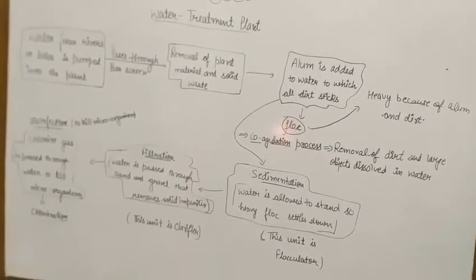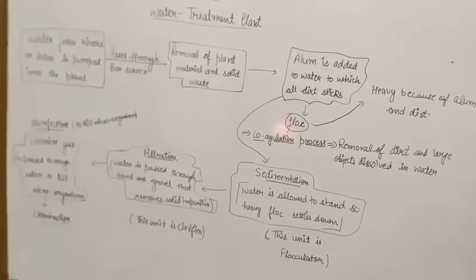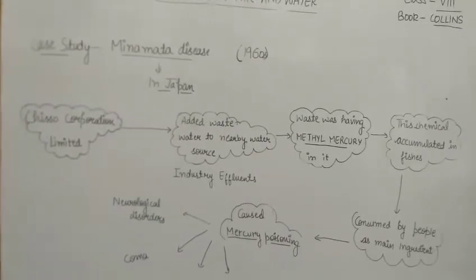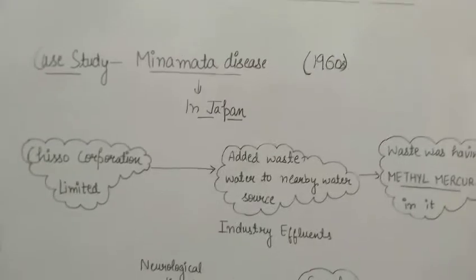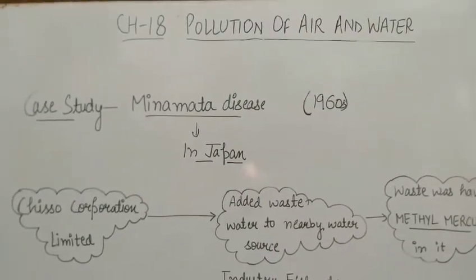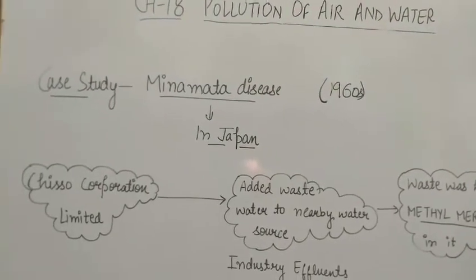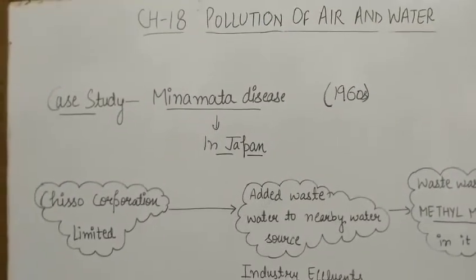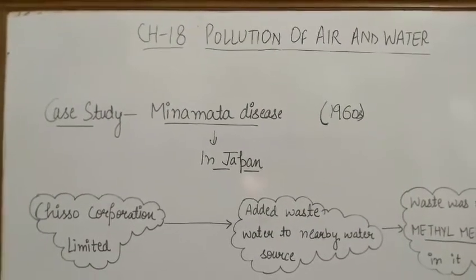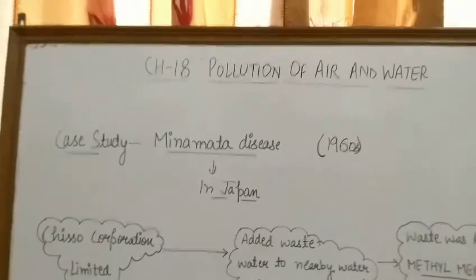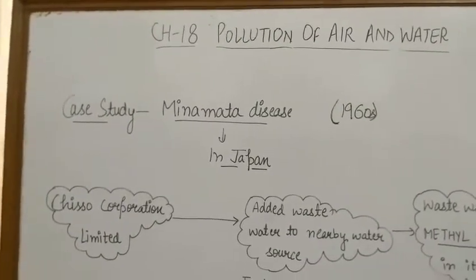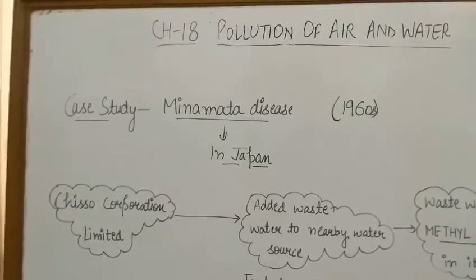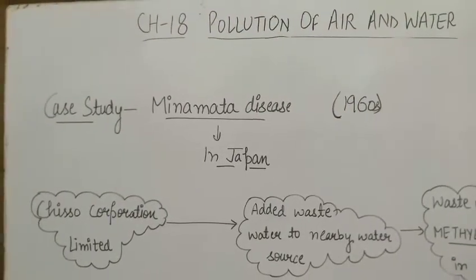This was all about the major topics of this chapter. After this we have one or two case studies related to the chapter. A case study means that whatever we have studied in the chapter, if any real parallel incident has occurred in the world around us with exactly the same sources and adverse effects on society, that real incident becomes a case study. For example, the sources of air and water pollution we studied — if a large-scale incident occurred in a community due to those exact sources and had adverse effects on society, studying that incident is a case study.